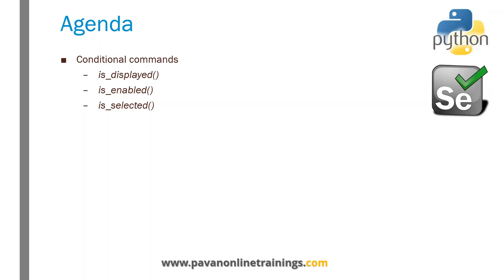In this video I'm going to explain about conditional commands in Selenium WebDriver using Python. Conditional commands are used when automating web pages to verify whether certain elements are displayed on the page or not, whether those elements are enabled or not, or whether checkboxes or radio buttons are selected or not. The is_enabled and is_displayed commands can be used for any kind of web element, whereas the is_selected method can be used specifically for checkboxes and radio buttons.